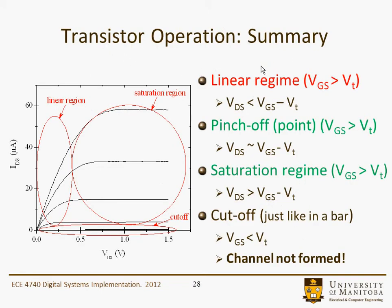Transistor operation summary: The linear regime is when VGS is greater than VT, the IDS–VDS characteristic is linear, and VDS is less than VGS minus VT. The pinch-off point is when VGS is greater than VT but VDS is approximately equal to VGS minus VT. In the saturation regime the device is on, VGS is greater than VT, and VDS is greater than VGS minus VT, so the current remains saturated. The cut-off region is when VGS is less than VT — no channel is formed and no current flows.